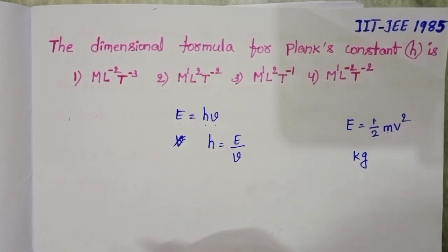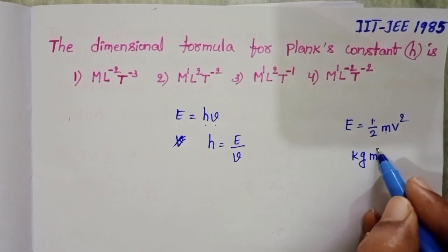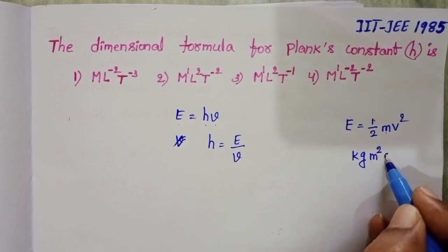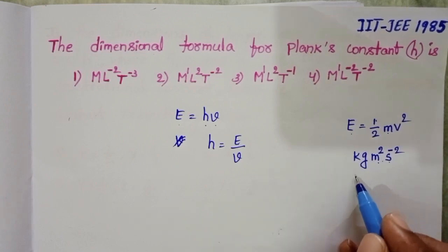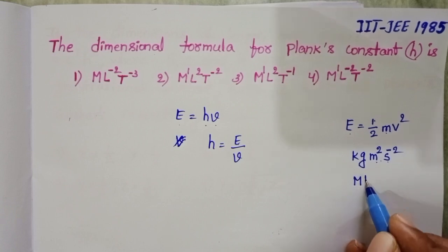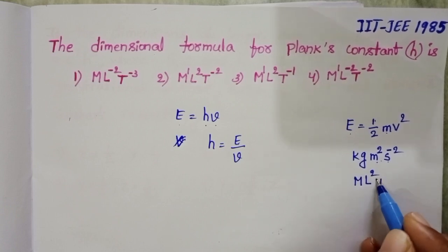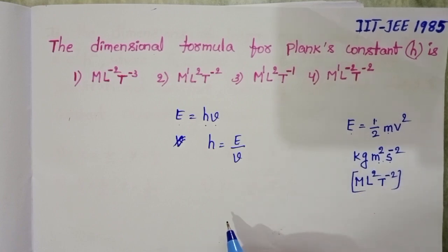has unit kg, and velocity squared is there, meter squared per second squared. The dimensional formula of energy is M¹L²T⁻². This is the dimensional formula of energy.